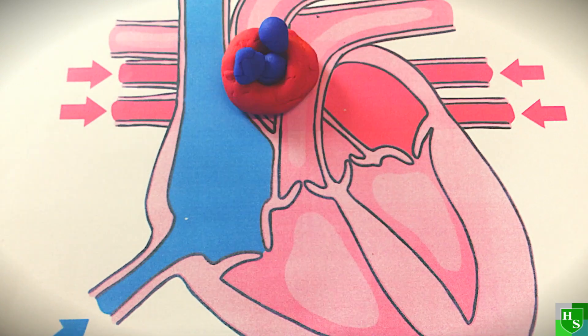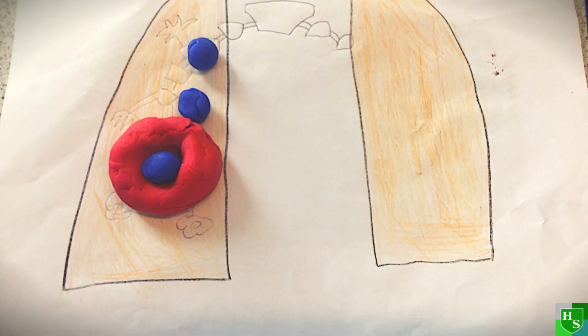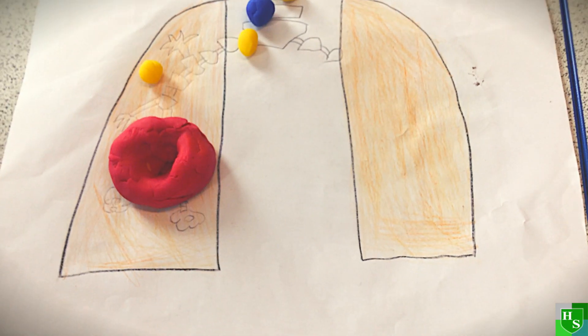As you can see, right here, it is traveling back to the lungs. In the lungs, the blood cell releases carbon dioxide and collects oxygen once again.